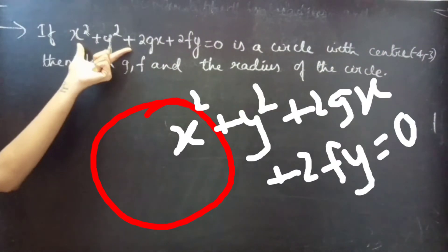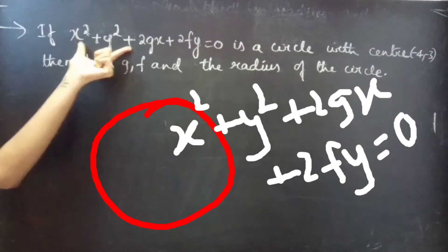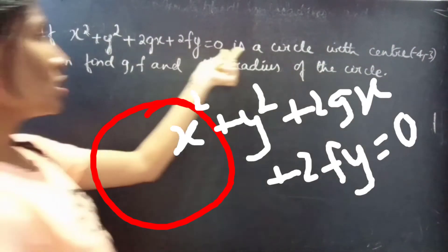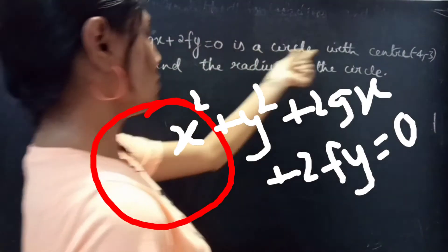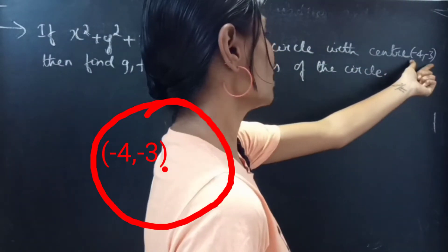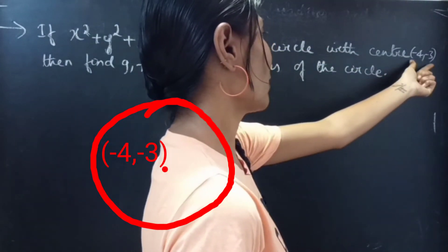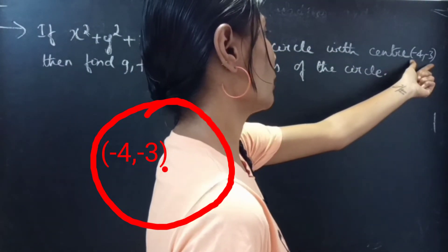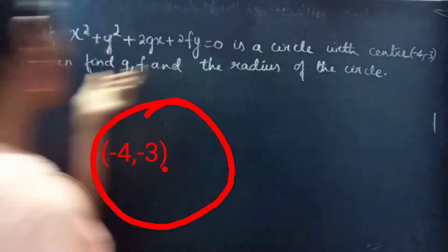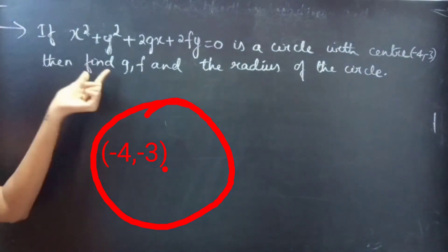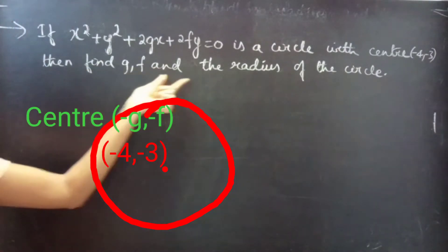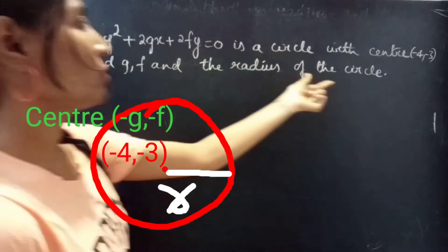If x squared plus y squared plus 2gx plus 2fy equals to 0 is a circle with center minus 4 comma minus 3, that is the ordered pair (minus 4, minus 3), then find g, f, and the radius of the circle.